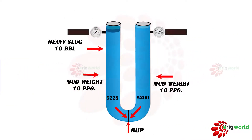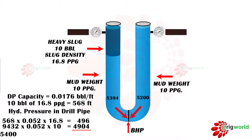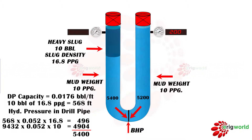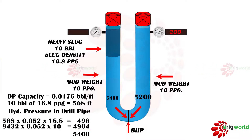If 10 barrels of heavy slug with a slug density of 16.8 ppg is pumped into the drill pipe, and immediately the well is shut by closing the BOP and FOSV, the drill string side hydrostatic pressure increases due to the heavy slug. The hydrostatic pressure in the drill string can be calculated as given, which equals 5400 psi. The annulus side hydrostatic pressure remains unchanged at 5200 psi.